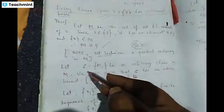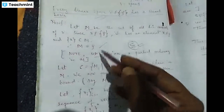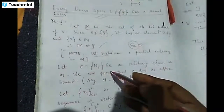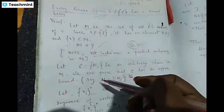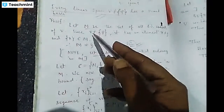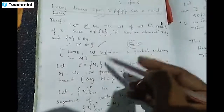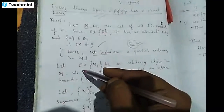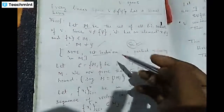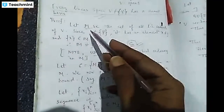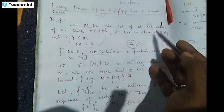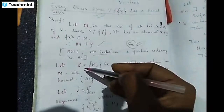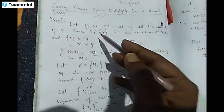Now we take C to be the collection of all chains in M. If we mark all the linearly independent subsets as M_i, then C is the collection of all M_i's — an arbitrary chain belonging to M.